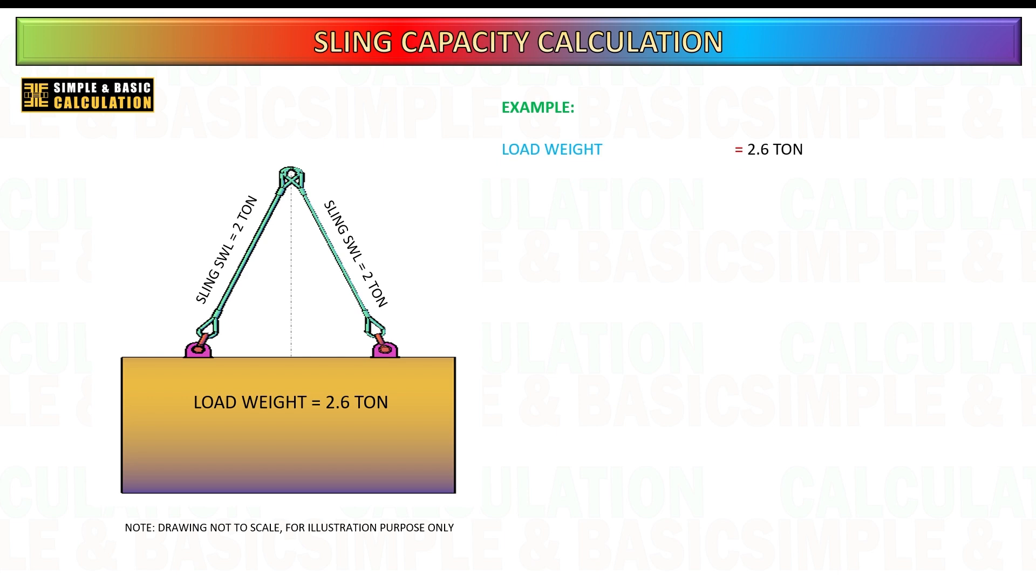Now let us proceed for the next example. If the angle is given from the vertical line instead of the horizontal, the calculation approach remains almost the same. However, you need to use the cosine function instead of the sine function.